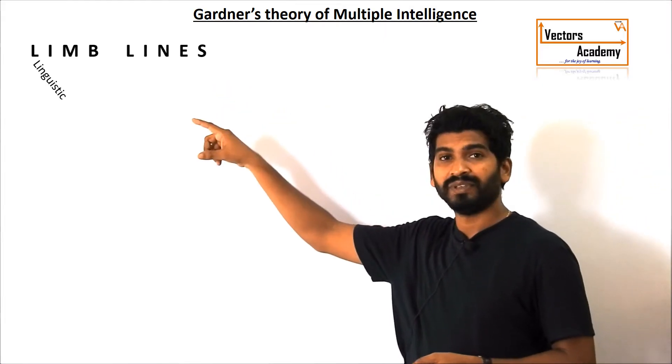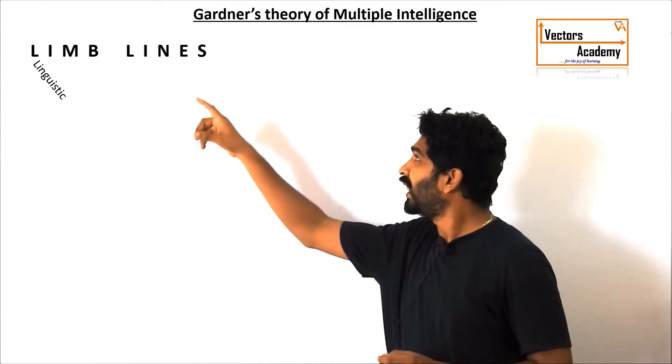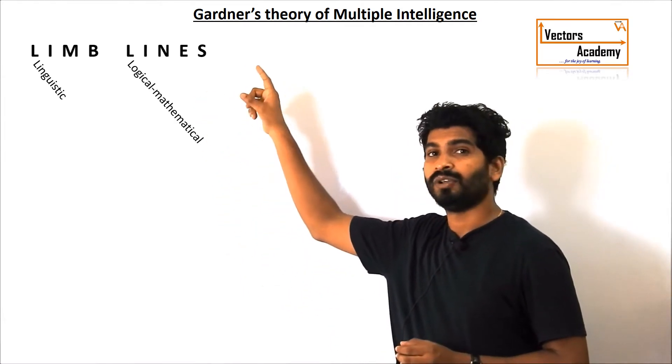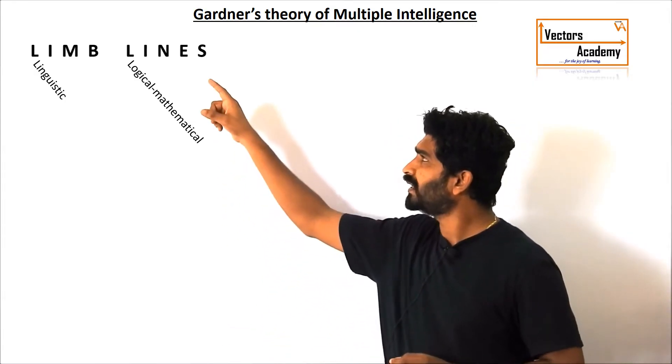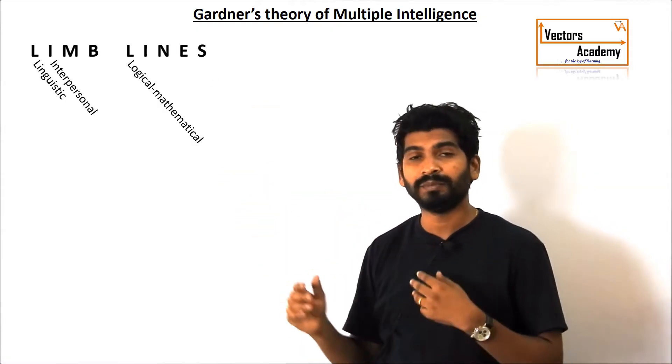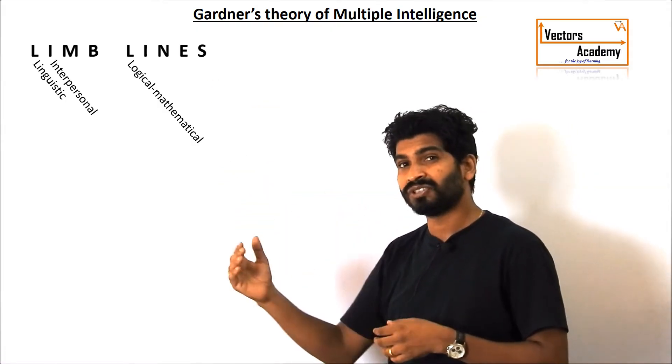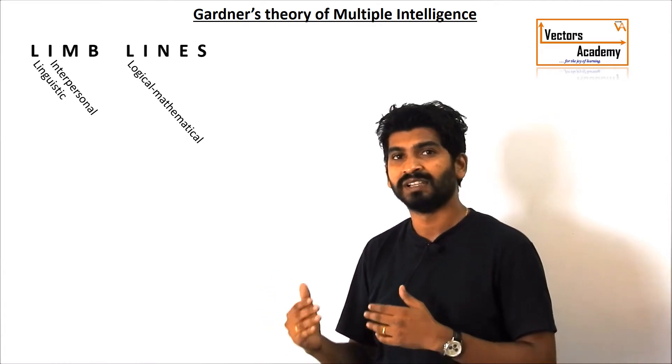L means linguistic. Linguistic means the command over the language. Another L that means logical mathematical. That is the numerical ability of a person. Then comes I that M. That is interpersonal. Interpersonal means how a person has a conversation with another person. How connected he feels with the other persons and so on.